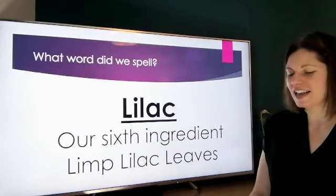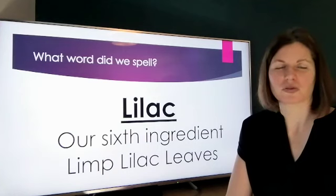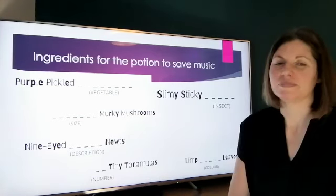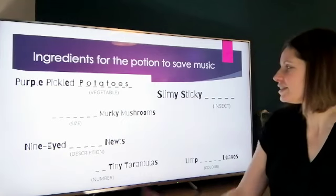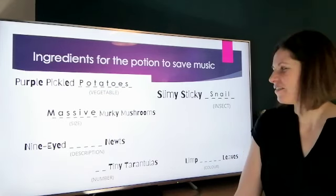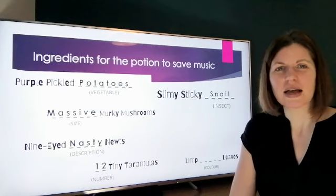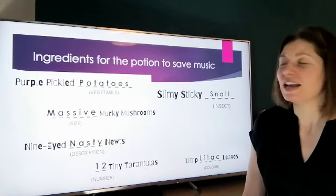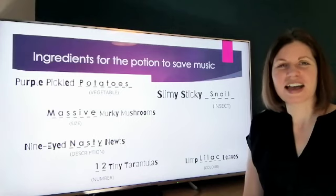So our crossword code becomes — LILAC! And our sixth ingredient is limp lilac leaves. Well done if you got all of those — it was a tricky one! Now let's go through and check all our ingredients: purple pickled potatoes, slimy sticky snail, massive murky mushrooms, nine-eyed nasty newts, twelve tiny tarantulas, and limp lilac leaves. Hopefully you've remembered and revised all your musical knowledge from these past few weeks. Great work! Have a good half term and I'll see you afterwards.